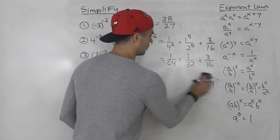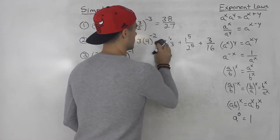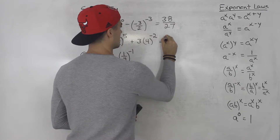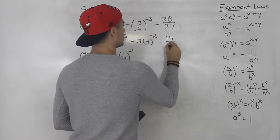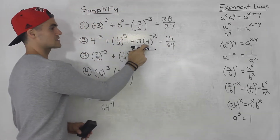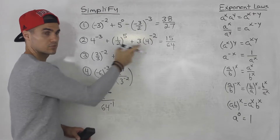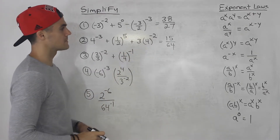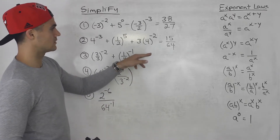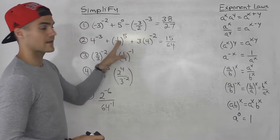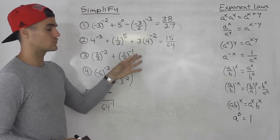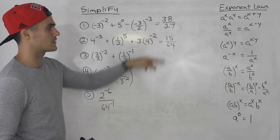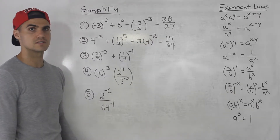You can always check your answer in the calculator. Take all of this initially, plug it into the calculator, making sure you get all the brackets correct. You may get a fraction, or your calculator might give you a decimal number. Then just take 15 divided by 64 and see if you get the same decimal.